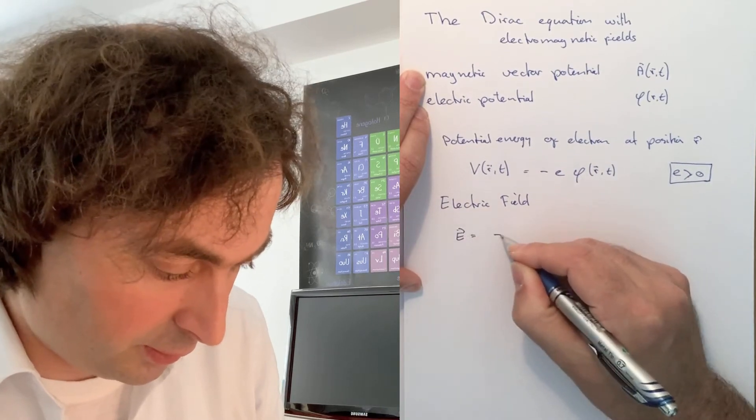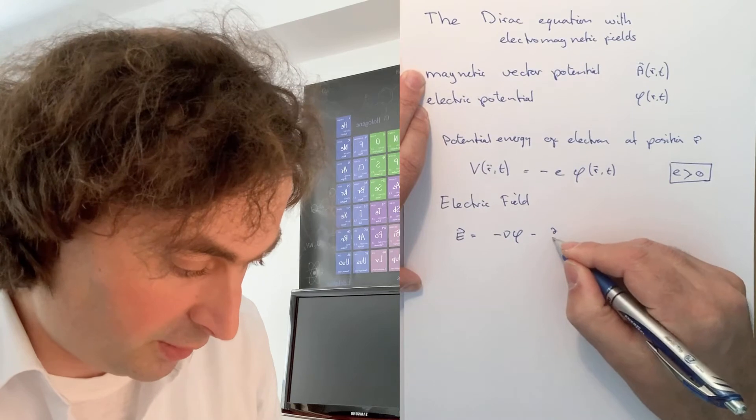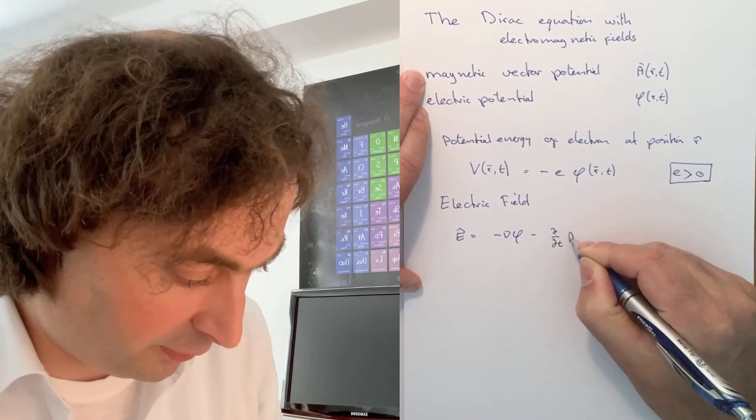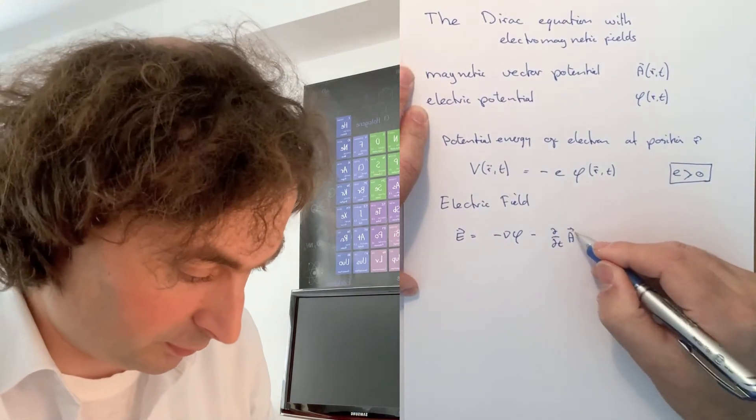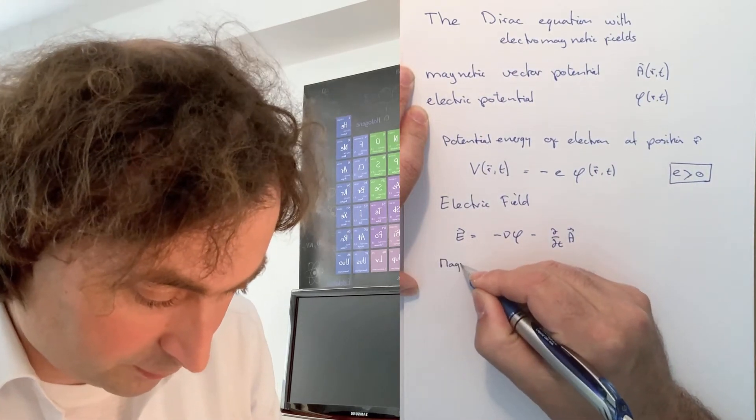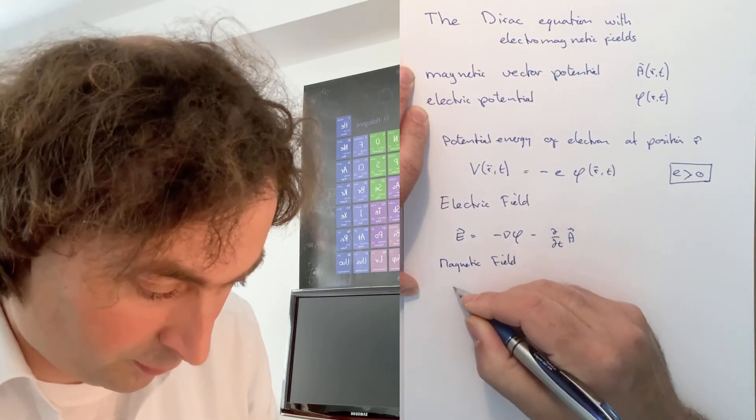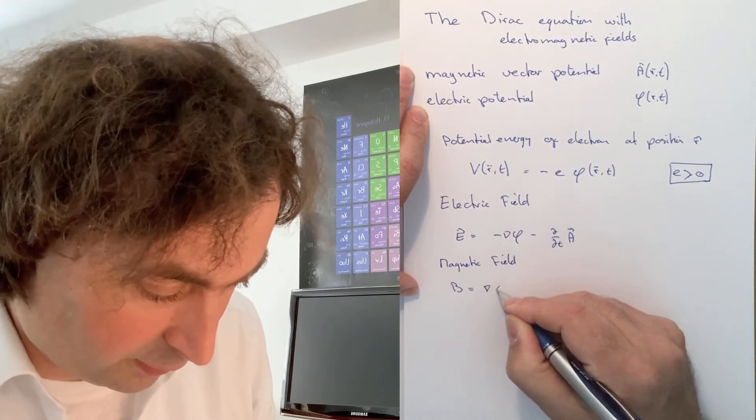We can look at the electric field: E is the gradient of your potential minus the time derivative of the magnetic vector potential. And the magnetic field is gradient cross A.